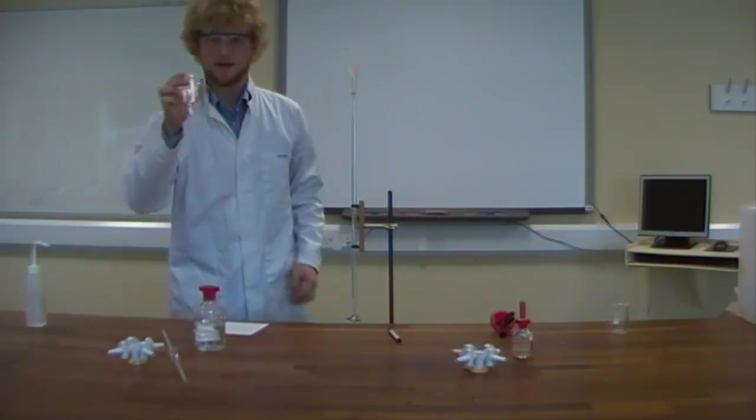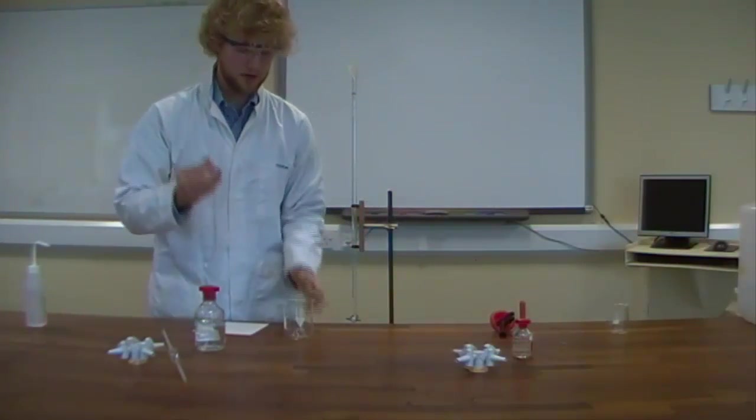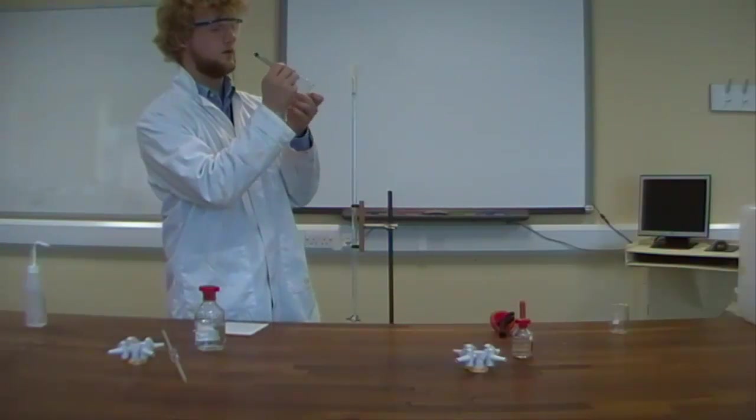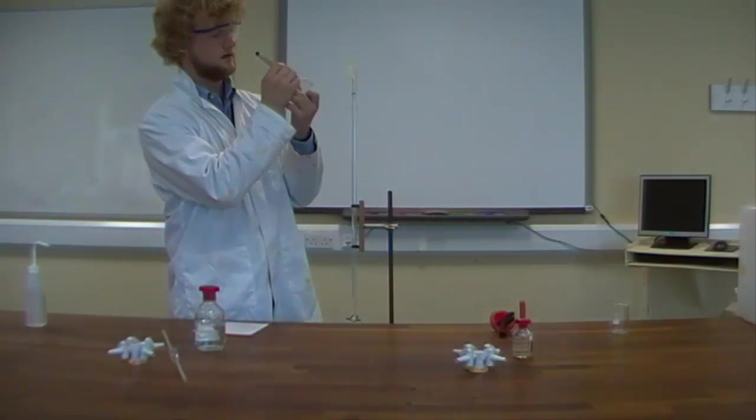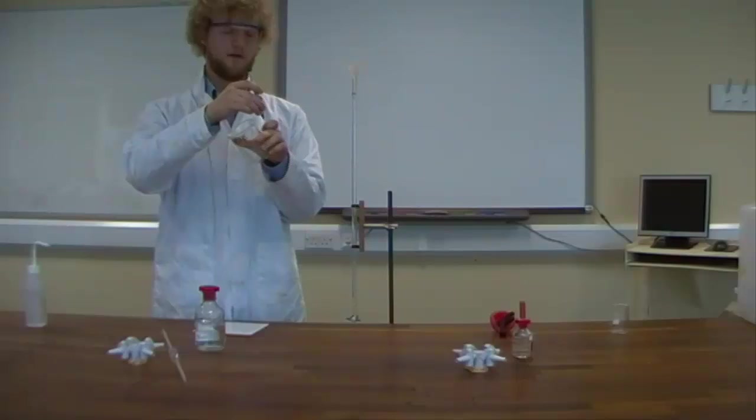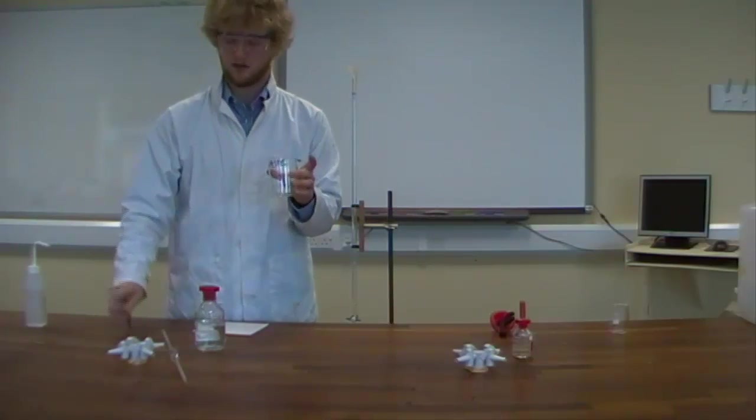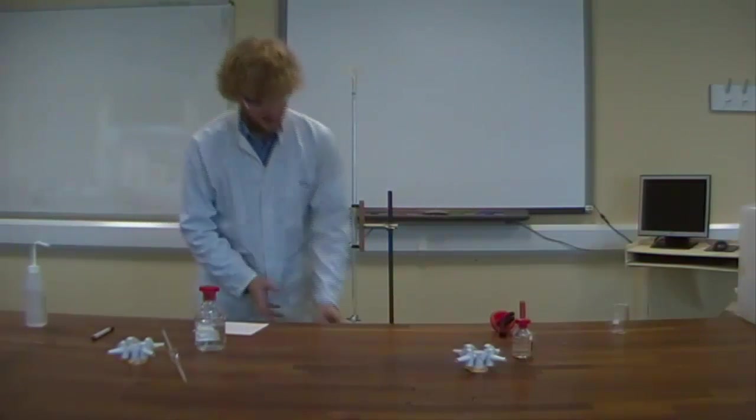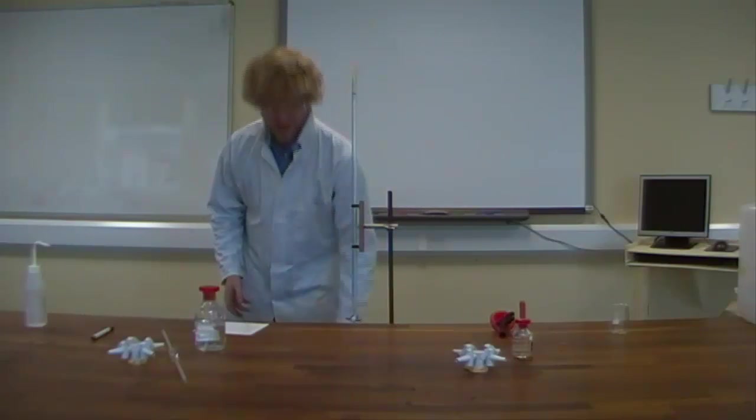I'm going to take a beaker, and using a permanent marker, I'm going to mark this as waste. It's very important that you label all bits of glass where you use them. I'm going to place that underneath my burette, just to catch any drips.